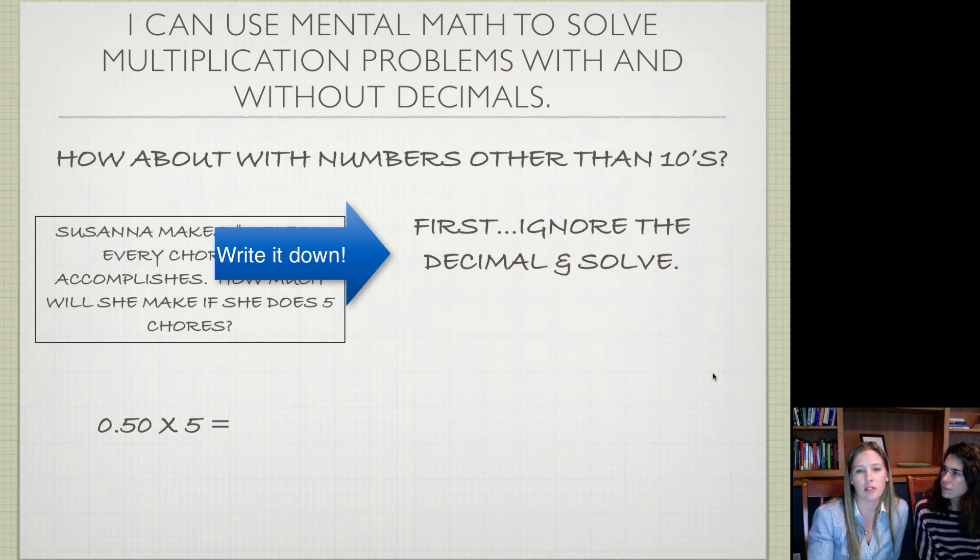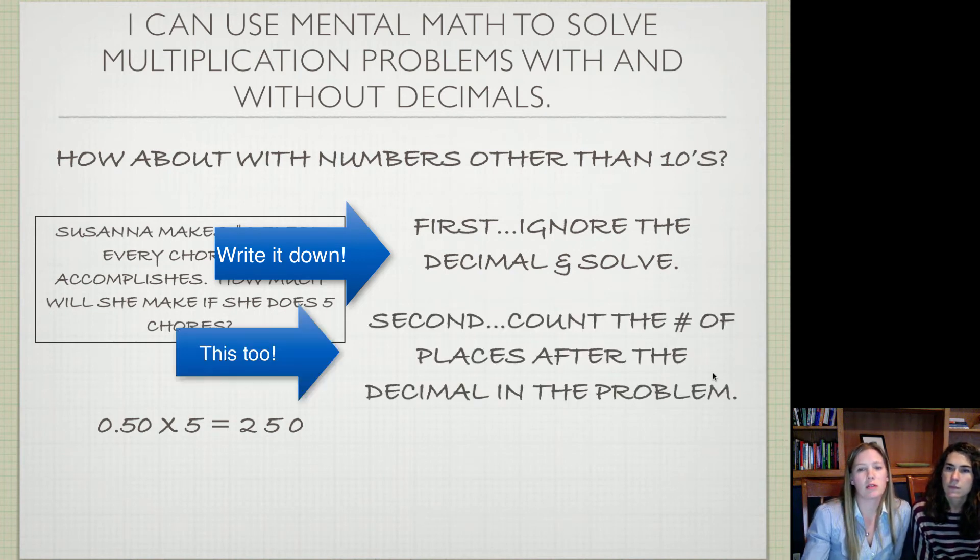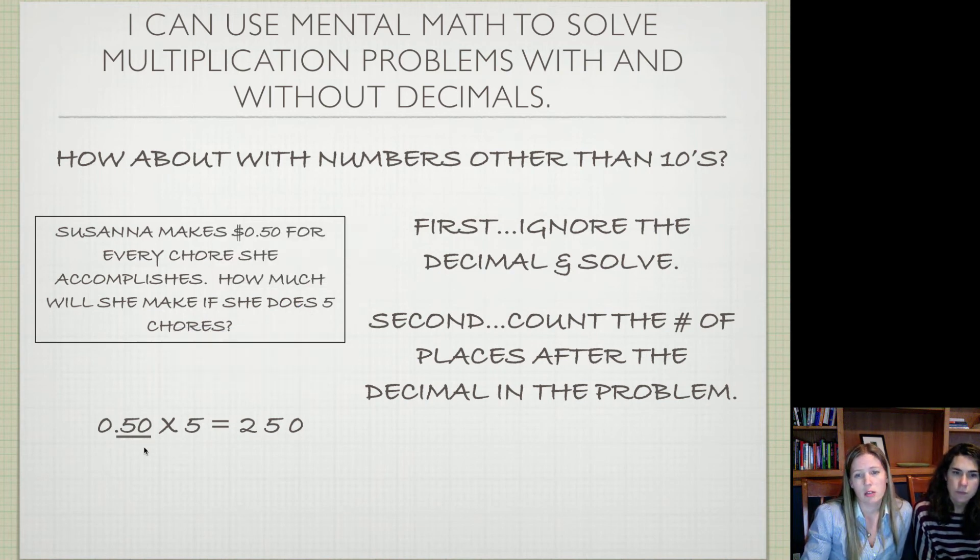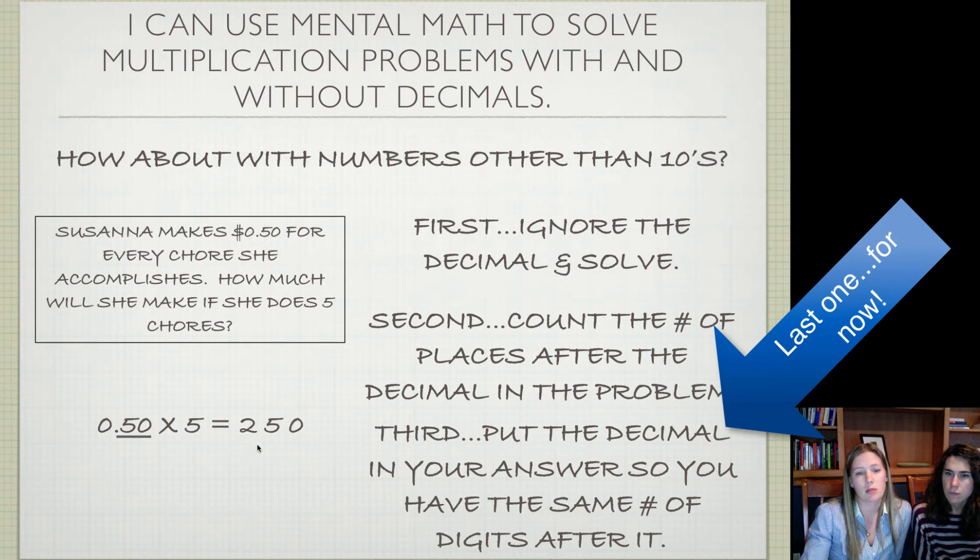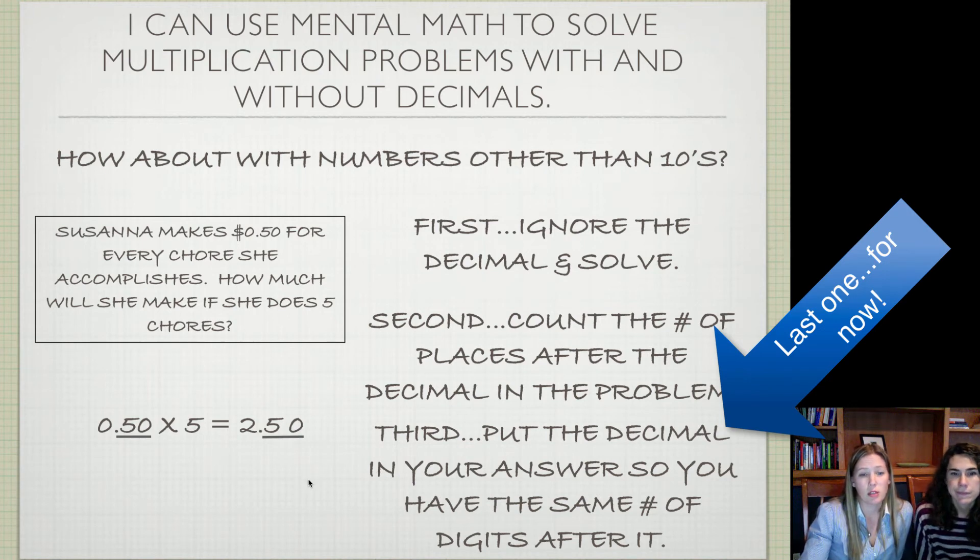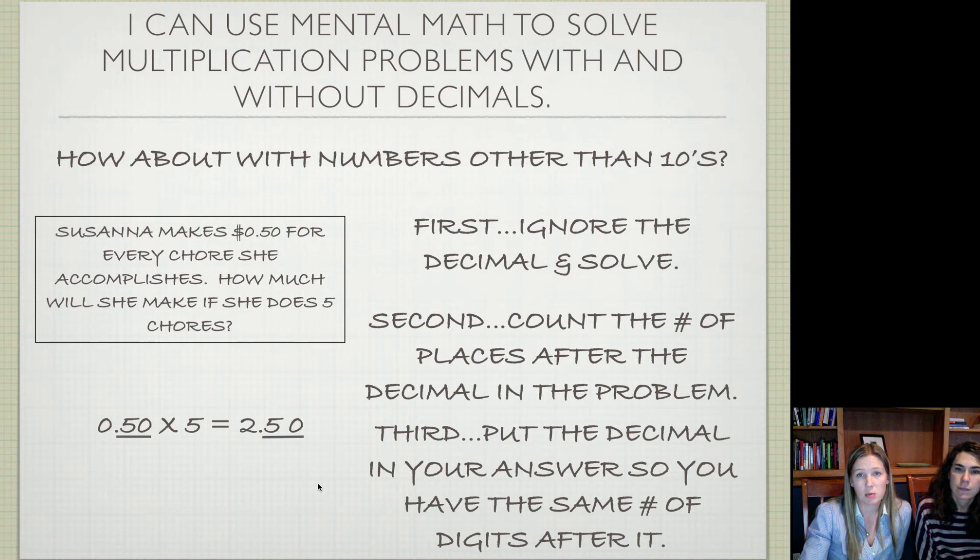Pretend the decimal's not there, and I'm worrying about 50 and 5. If I need to multiply 50 times 5, 5 times 5 is 25, and then you add the 0 from the end: 250. The second thing you do now is count the number of places that are after the decimal in the problem. If I look at my problem, there's no decimal here. I have one here, and there are two places: 1, 2. Step 3, put the decimal in your answer so you have the same number of digits after it. My answer has to have 1, 2 places after the decimal. I'm just underlining it so you can see what those two places are. And then you put the decimal in. Easy peasy.